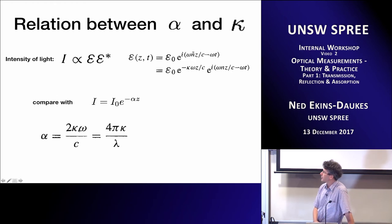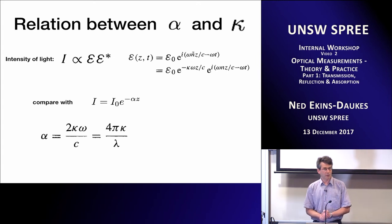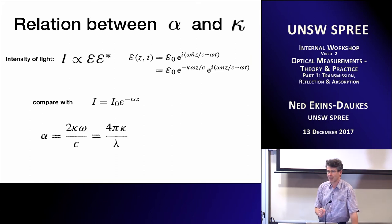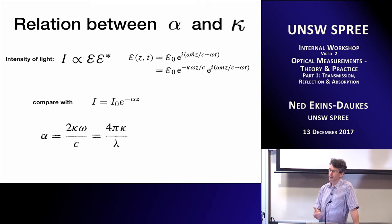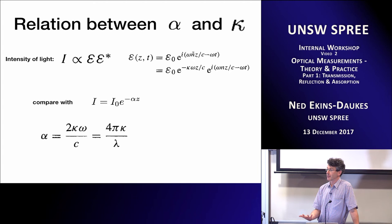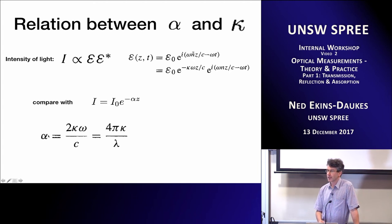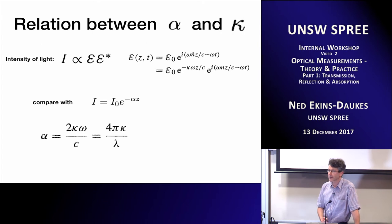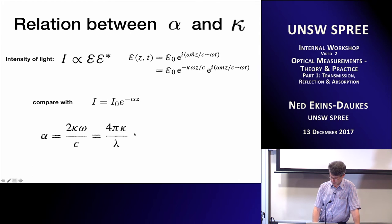I'm not here to give you detailed derivations — Mark Fox's book is very good at that. What I want to establish is that if I know my absorption coefficient α, I know the complex component κ of the refractive index, and vice versa. If I've done ellipsometry and know κ, I can work out α. These two quantities are not the same — there's a frequency/wavelength dependency — but you are effectively expressing the same physical quantity.